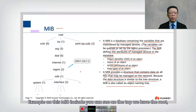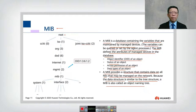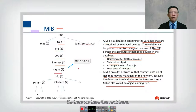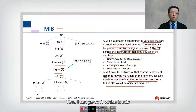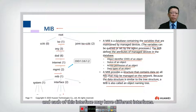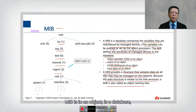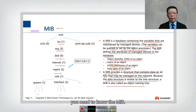An example MIB naming tree starts at the root, then goes to ISO, organization, DOD (Department of Defense), internet, and management. From there, you navigate to MIB-2, then to interfaces, and each interface may have different sub-objects. The OID can become very long. Remember, MIB is a database — if you want to query a certain object, you need to know its MIB OID.